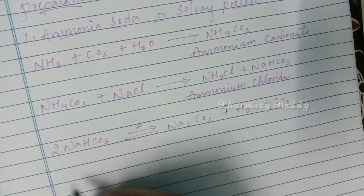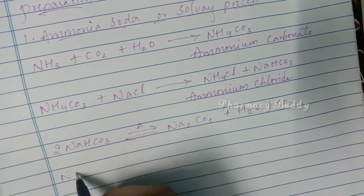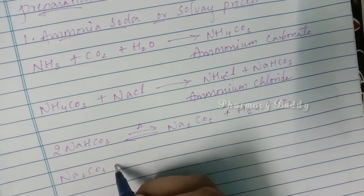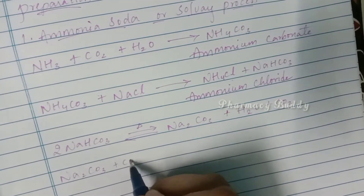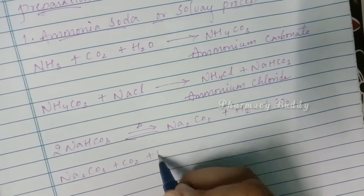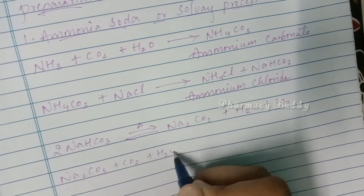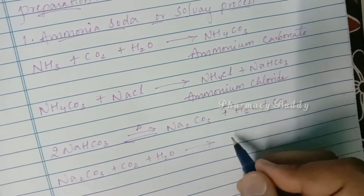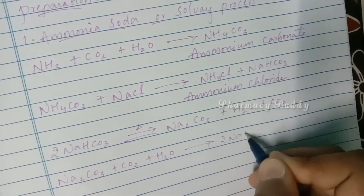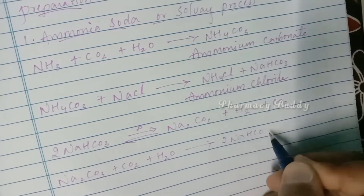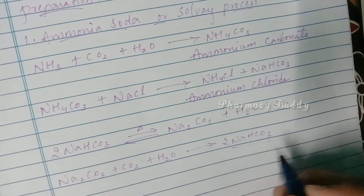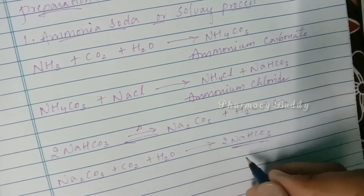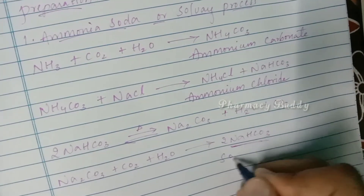The following step is: Na2CO3 plus CO2 plus H2O gives rise to 2NaHCO3. This is the final product — sodium bicarbonate — produced by the Solvay process.